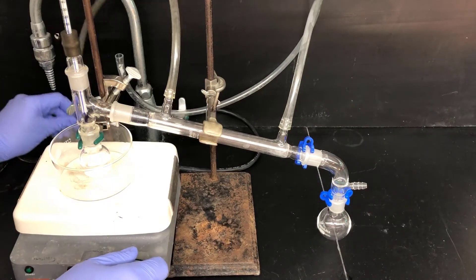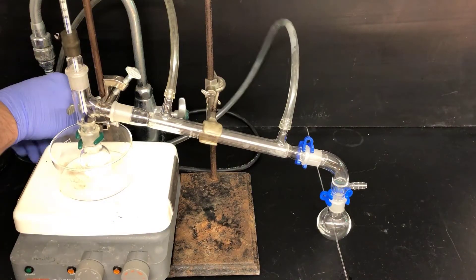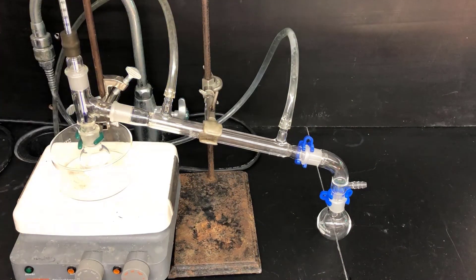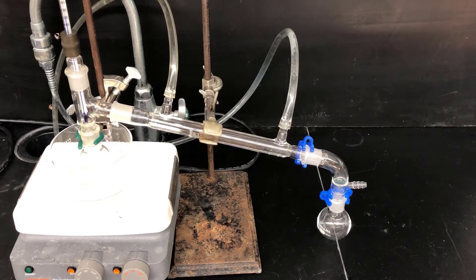Now I'm attaching the condenser hoses. The top hose goes to the drain, while the bottom hose goes to the water inlet. Then I'll turn the faucet on slowly to get the cooling water flowing through the condenser.